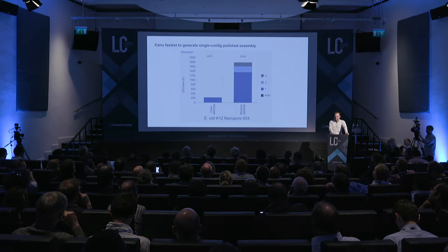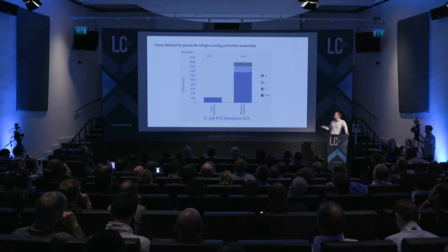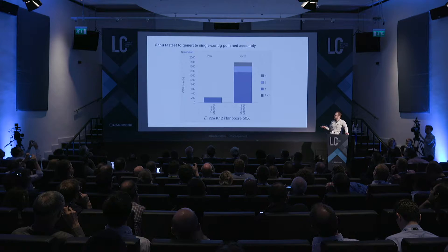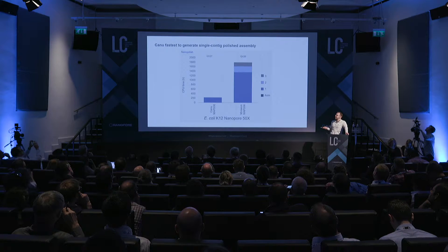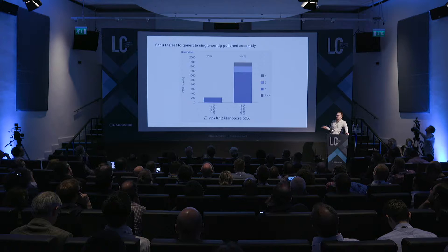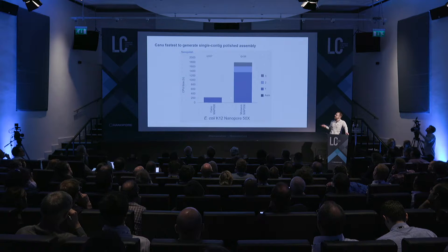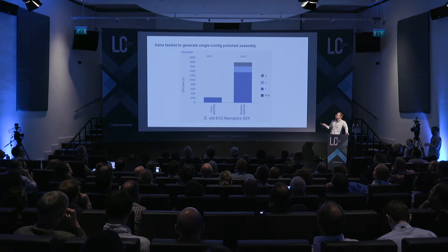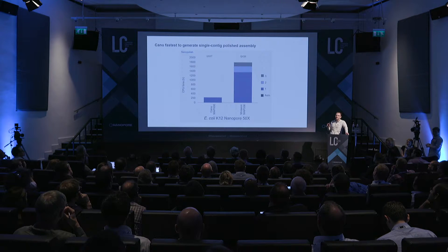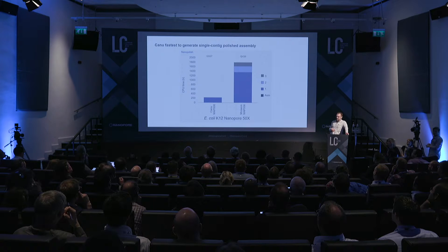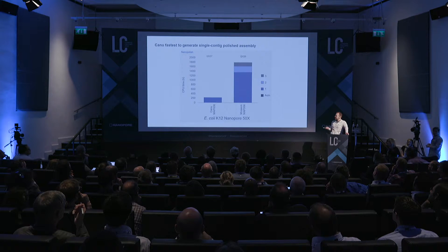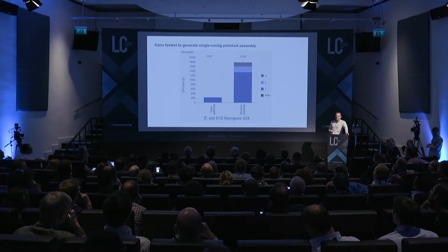The first thing we tested is nanopore-only assembly, using Canu and miniASM. The assembly time is very fast — the dominant time is generating the high-quality consensus from Nanopolish, and Canu's time is about 10 times faster than the Nanopolish time. They both get to about the same quality, around 99.82% identity, which is similar to what Jared Simpson mentioned yesterday. But Canu is a lot faster because the identity output from its assembly step is much higher than miniASM's.